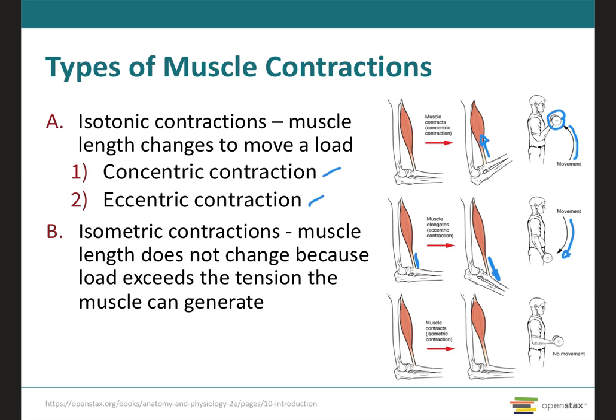When the length of a muscle increases during a contraction, the contraction is an eccentric isotonic contraction. During an eccentric contraction, the tension exerted by the myosin cross bridges resists the movement of the load — in this case the weight — and slows the lengthening process.